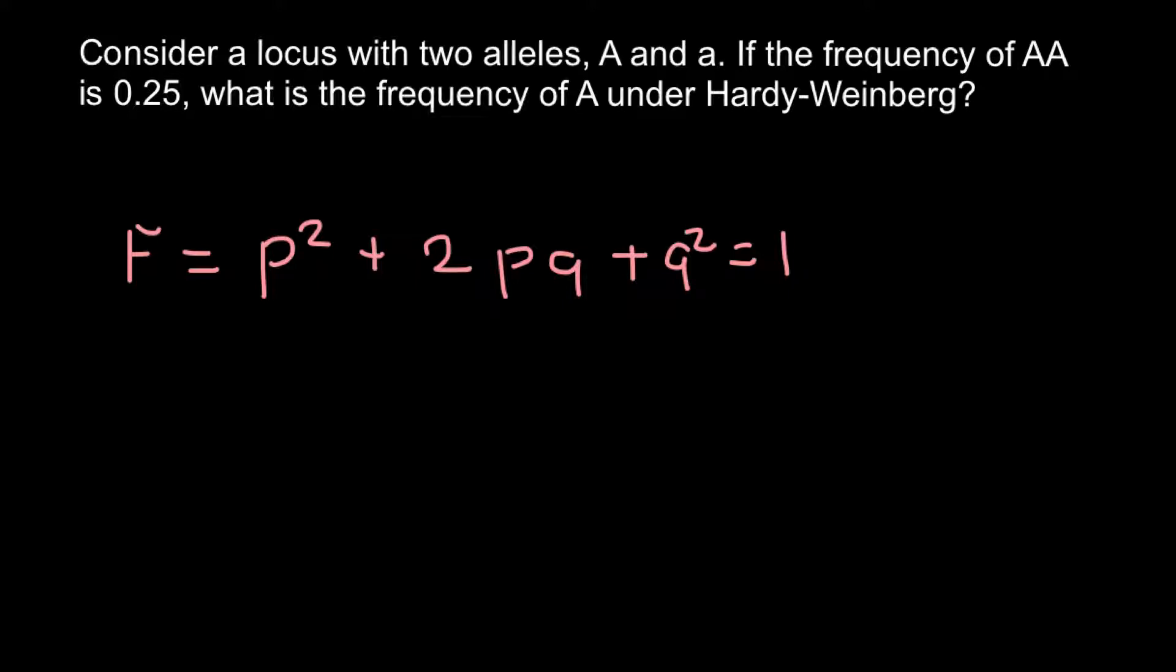So all the p alleles plus all the q alleles would also equal 1, or 100 percent.